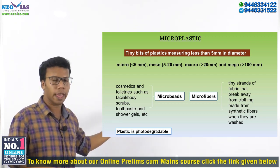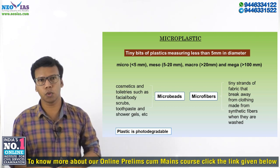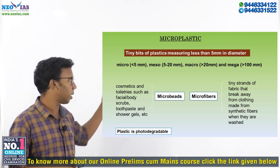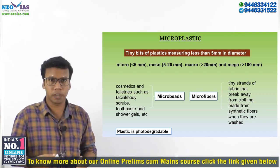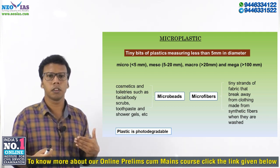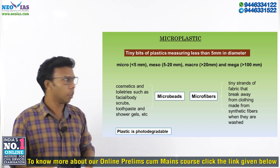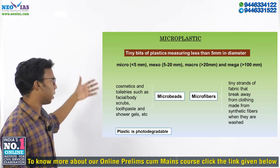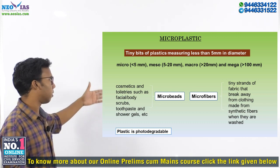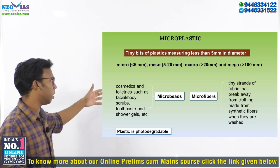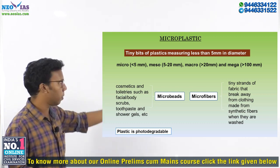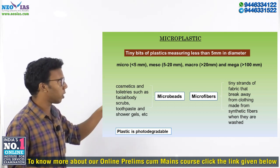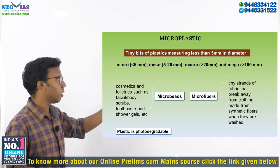Microbeads and microfibers are the two types of microplastics. These microbeads and microfibers are made by humans in order to use in some goods and products. Microbeads are used commonly in cosmetics and toiletries such as facial and body scrubs, toothpaste, and shower gels. Microfibers are tiny strands of fabric that break away from clothing made from synthetic fibers when they are washed.